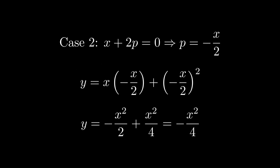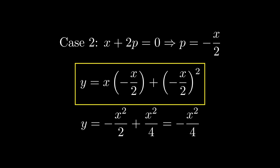The first case, dp/dx = 0, is the trivial general solution we don't focus on. The interesting case is x + 2p = 0, giving p = −x/2. Substituting back into y, we get y = x · (−x/2) + (−x/2)², which simplifies to y = −x²/4. That's the answer to this ODE — thanks for watching!